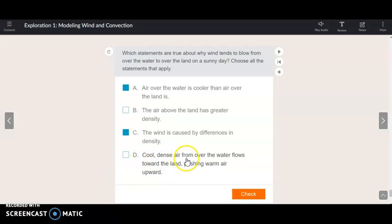All right, so cool, dense air from over the water flows toward the land, pushing warm air upward. During the day, that is indeed true. The cool, dense air, that's over the water, flows toward the land, pushing warm air upward. That's what happens during the day. Click on that. Bam. We can even check that.